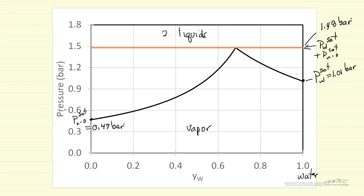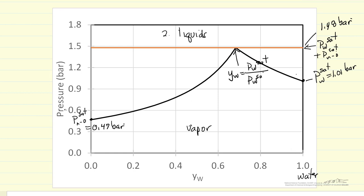The vapor has both components. The mole fraction of water in the vapor that is in equilibrium with the two liquids must be the saturation pressure of water — since that's its partial pressure — over the total pressure, which is the saturation pressure of water plus the saturation pressure of n-octane. This gives 0.68 mole fraction.